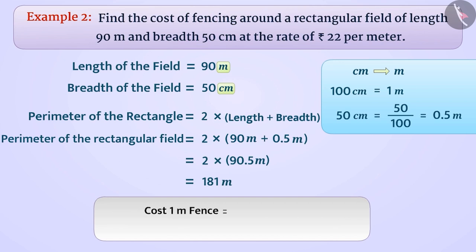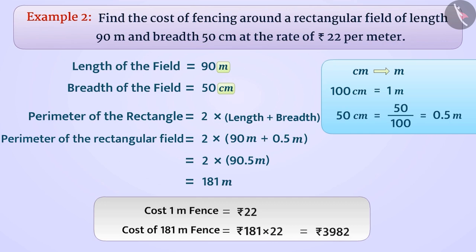Since the cost of 1 meter fence is equal to Rs. 22, the cost of building a 181 meter fence is equal to Rs. 181 into 22, which is equal to Rs. 3,982.